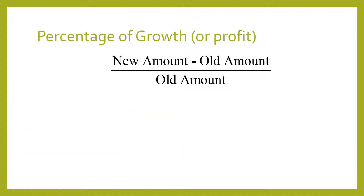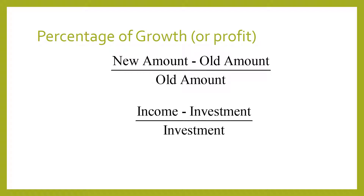Now to figure out percentage of growth or percentage of profit, you have to figure out the growth and divide that by your original. You're comparing how much you ended up with to how much you started with, and expressing that as a percentage. So percentage of profit is your profit — income minus investment — as the numerator, compared as a percentage to your investment.